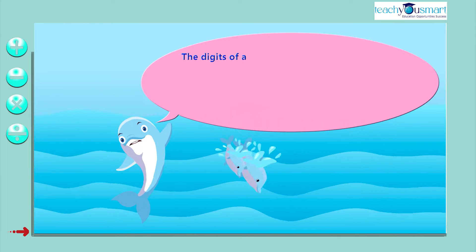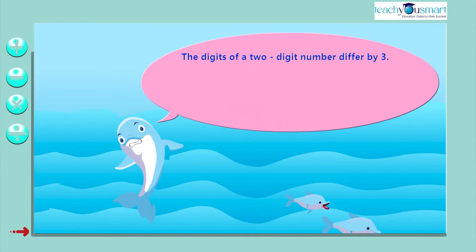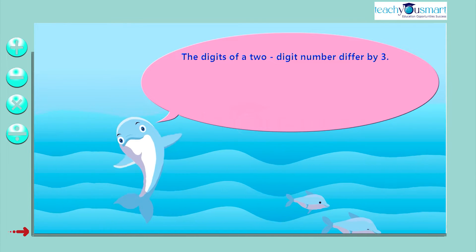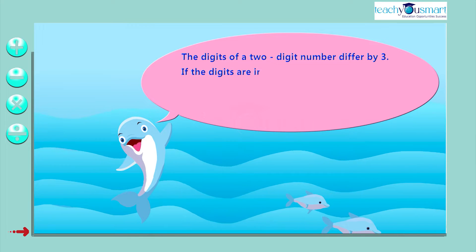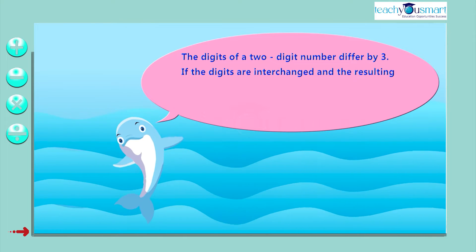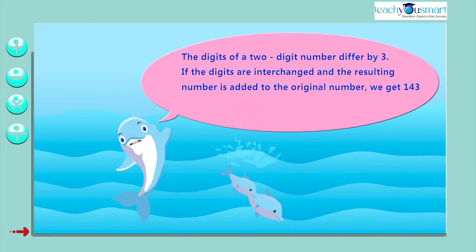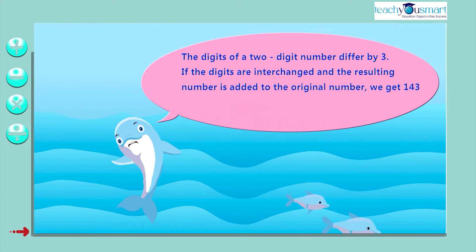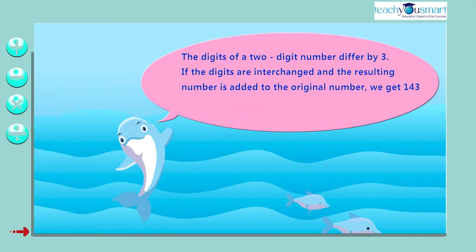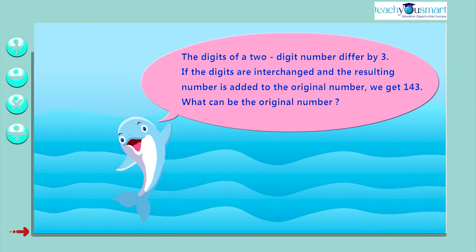The digits of a two-digit number differ by three. If the digits are interchanged and the resulting number is added to the original number, we get 143. What can be the original number?